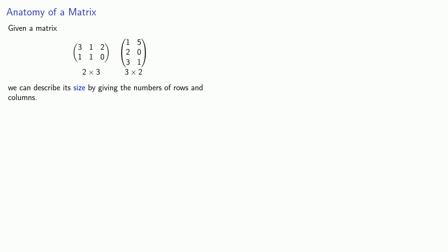If I want to speak about the individual entries in a matrix, I'll give the location in terms of both the row and the column. So if my matrix is capital A, then A subscript i,j is going to refer to the entry in the i-th row j-th column.